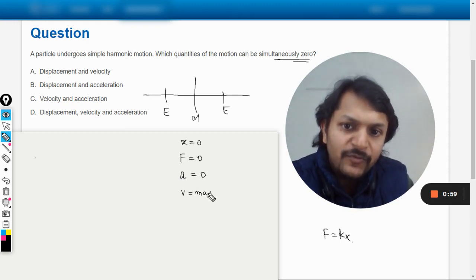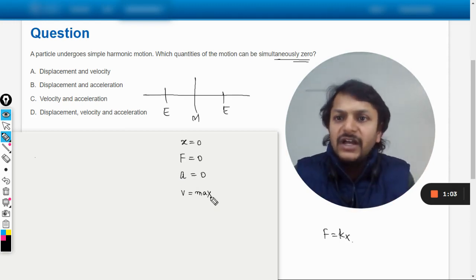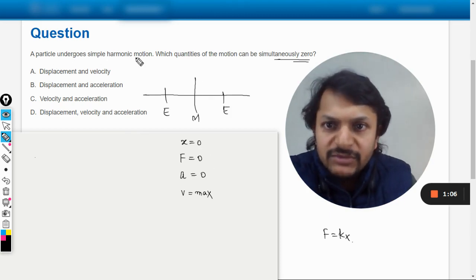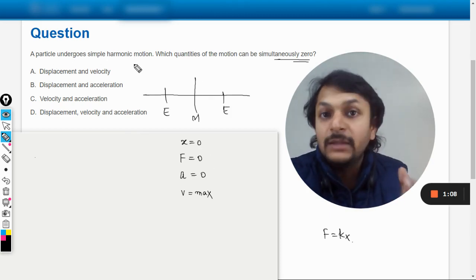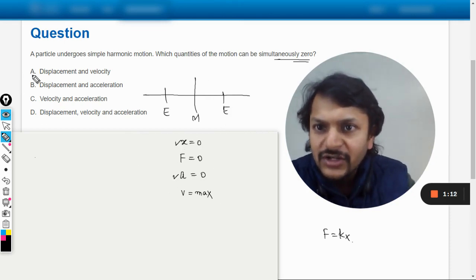And what about the velocity? The velocity is having the maximum value at the mean position. We know this. So here we have the answer: the particle undergoing simple harmonic motion, which quantities of the motion can be simultaneously zero? The displacement and the acceleration. So our answer is definitely B.